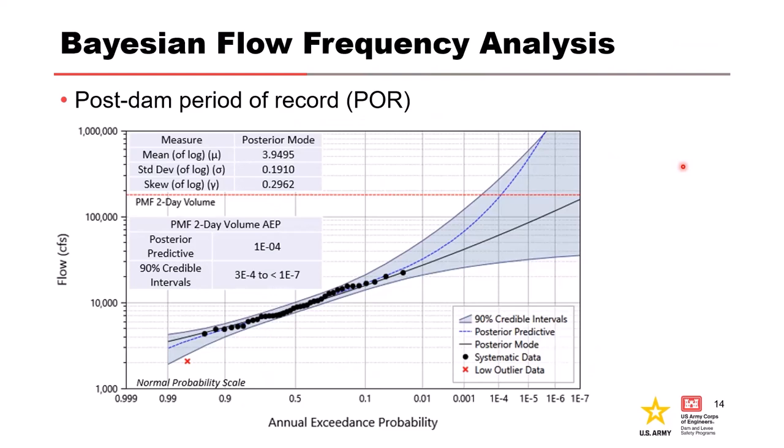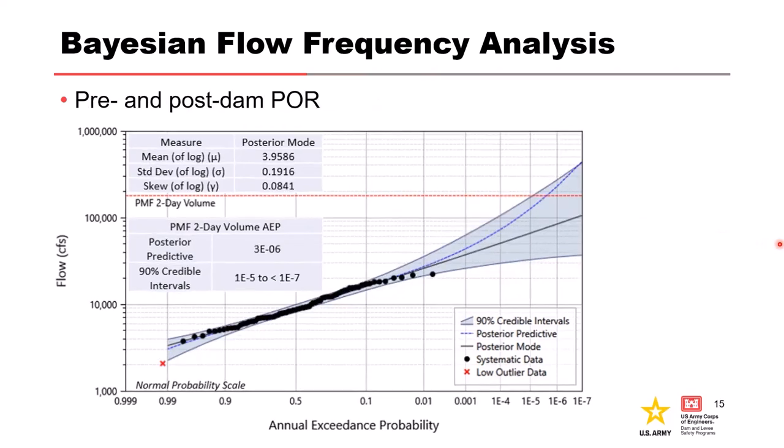Before moving on, I want you to have an idea for the change effects of adding data. This is the flow frequency curve originally used that included only inflow records after the dam was built, just 1980 and after. At that screen level effort, this left the overtopping failure as the risk driver. Look how much uncertainty we have, how far our expected curve is from our posterior mode curve. Short period of record means a lot of uncertainty, resulting in the mean loading being pretty frequent.